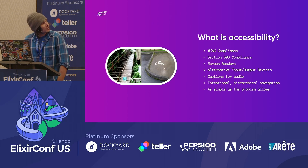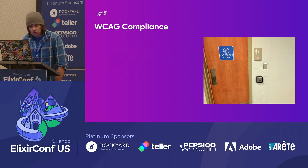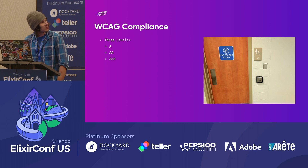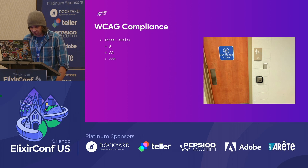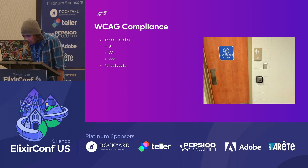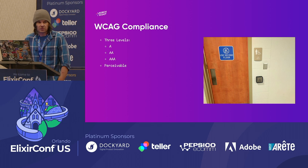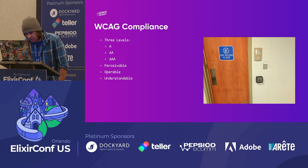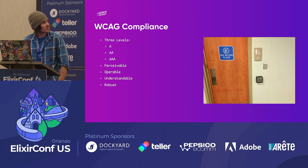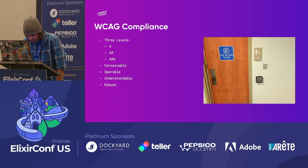Let's focus in on WCAG compliance. There are three levels: A, AA, and AAA. A is the bare minimum, AA is recommended, and AAA is very thorough. It's a big set of rules — thousands of them — but they fall into four broad categories: perceivable, operable, understandable, and robust. If you remember the acronym POUR, that might help you out.